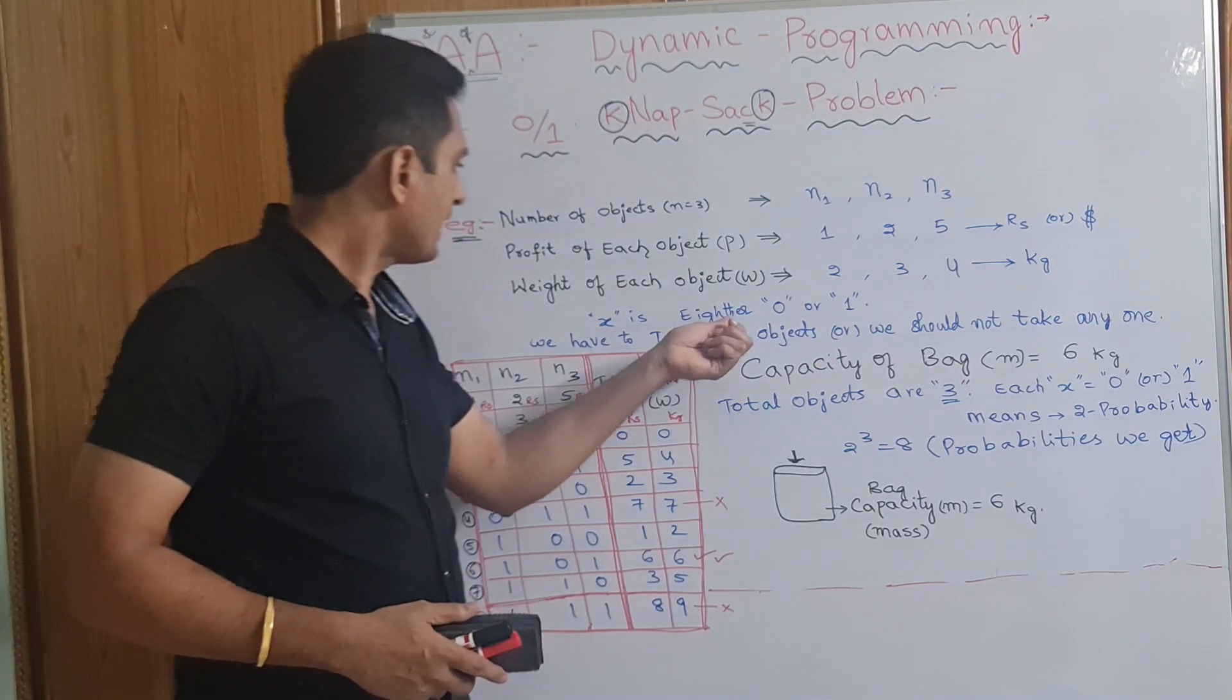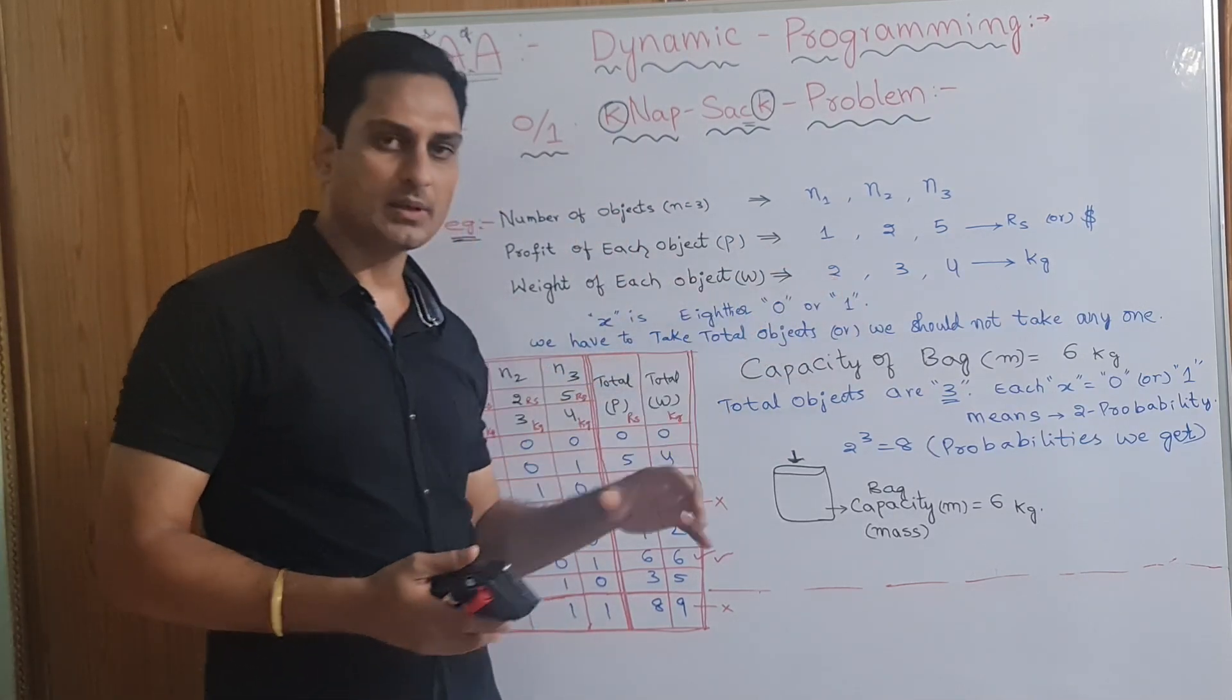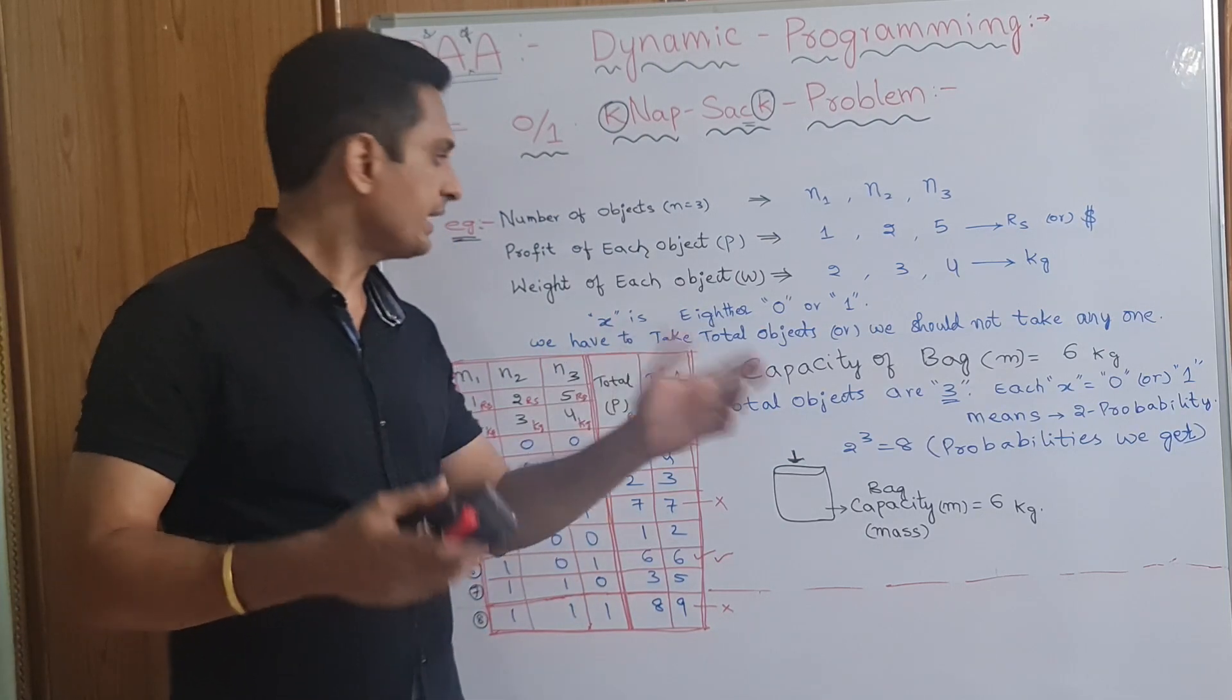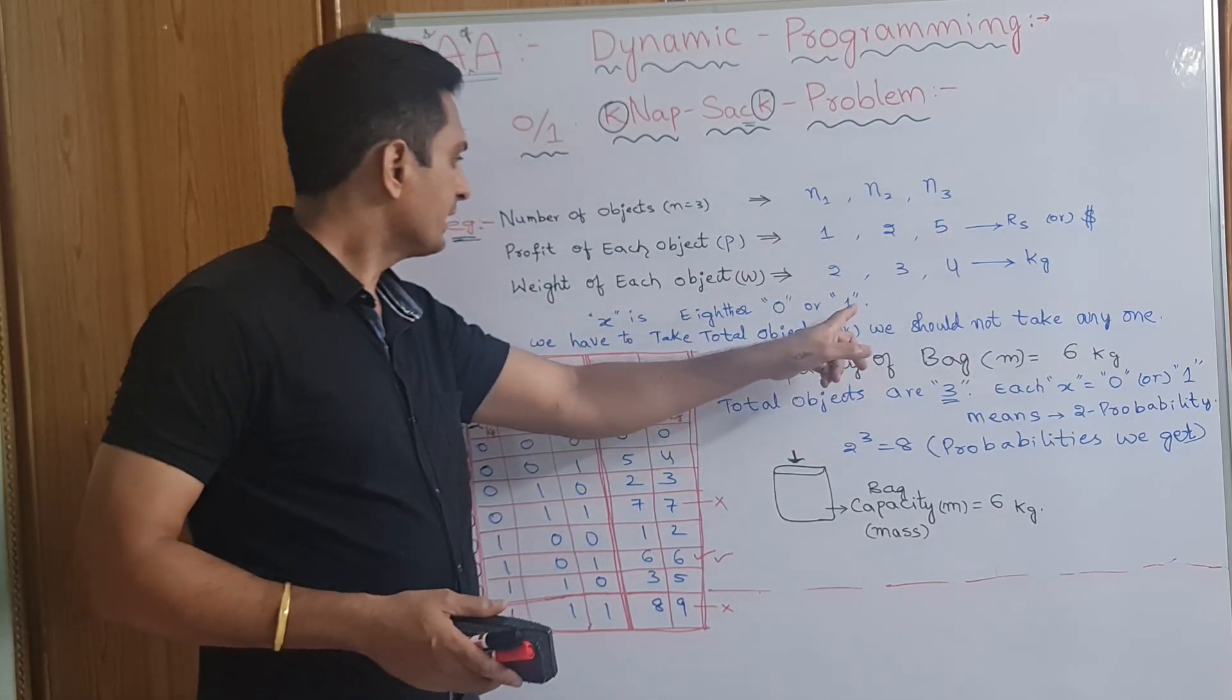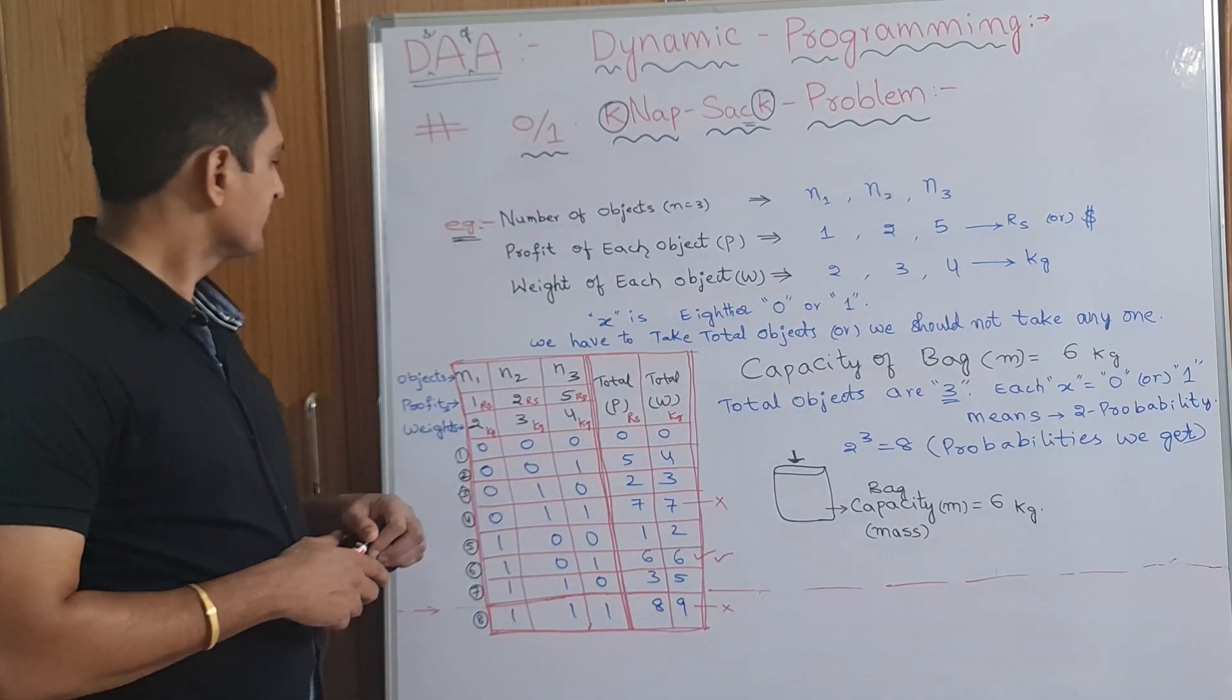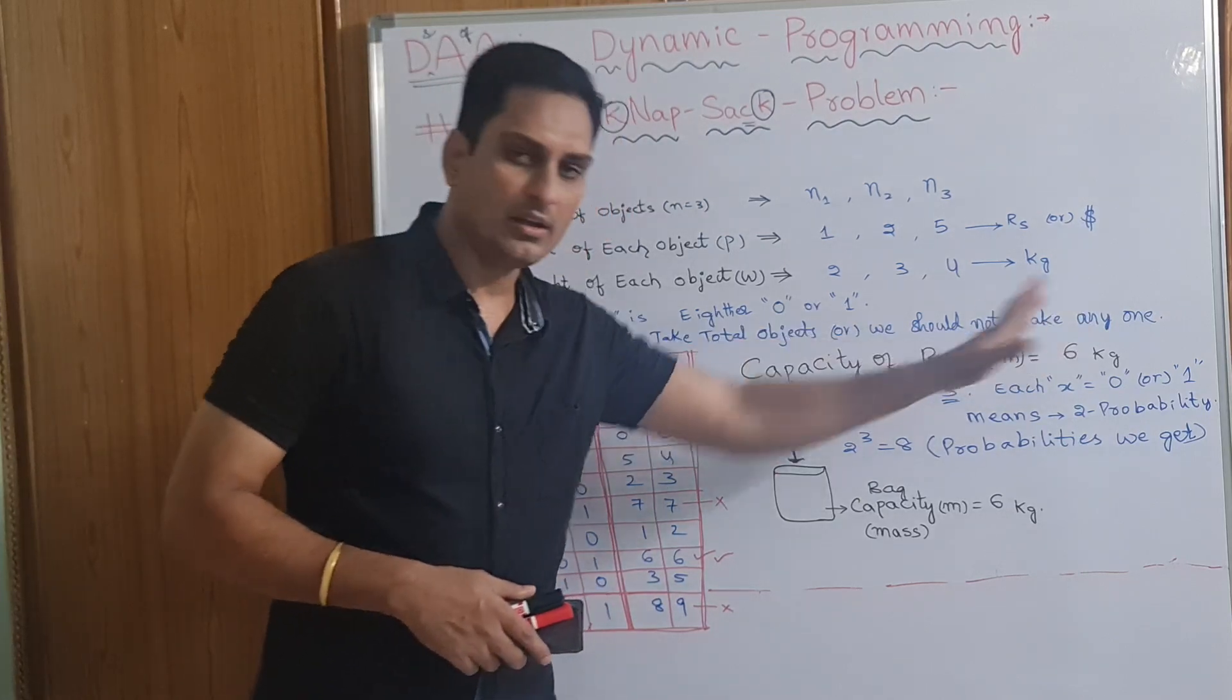X is either 0 or 1. X. You can fill the bag with complete objects, complete kgs. Or when the bag is filled, you should not take any of the objects. 0 means you should not take any object, any of these three. Or you can take full kgs of the objects. We have to take total objects or we should not take any one.